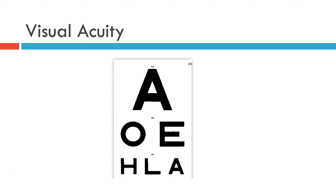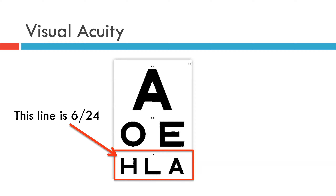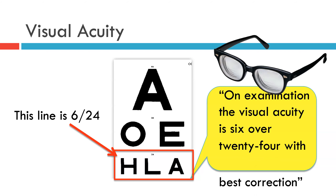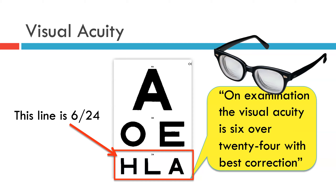The left eye is then tested in a similar manner. Say for instance this patient can read the third line on the chart. On this particular chart that line carries the number 24, so the patient's visual acuity is 6 over 24. To communicate this to a fellow professional, you would say: on examination the visual acuity is 6 over 24 unaided. If the patient was using their habitual distance spectacles, you would say the visual acuity is 6 over 24 with best correction.